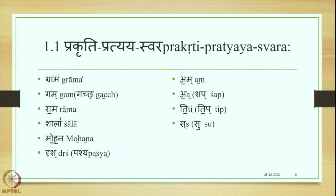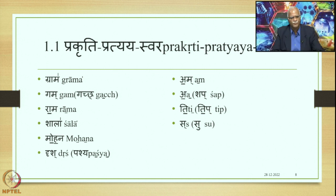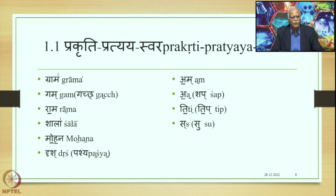The Prakriti Pratyaya Swaras amongst all these words are the following: Grama is Adyudatta, Gama is Accented, Rama is Finally Accented, Shala is Adyudatta and Mohana is Antodata, Dhrusha is Accented. Am, which is a Pratyaya, is not Accented. A, which is also a Pratyaya in Gachyati, is not Accented. Ti is also not Accented. Su is not eligible for getting any accent because there is no vowel visible in the form.